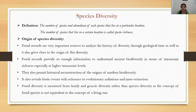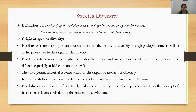The next term is species diversity, defined as the number of species and abundance of each species that live in a particular location. The total number of species present in a particular location is called species diversity, and the number of species that live in a certain location is also referred to as species richness.